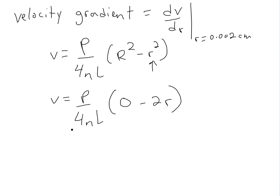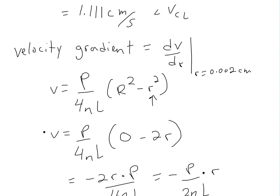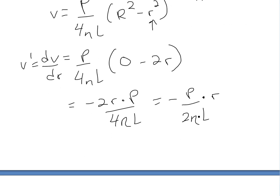Simplifying, we get negative 2r times P over 4 eta L. The twos cancel, so this becomes negative P over 2 eta L times r. This is dV/dr or V prime, the derivative.